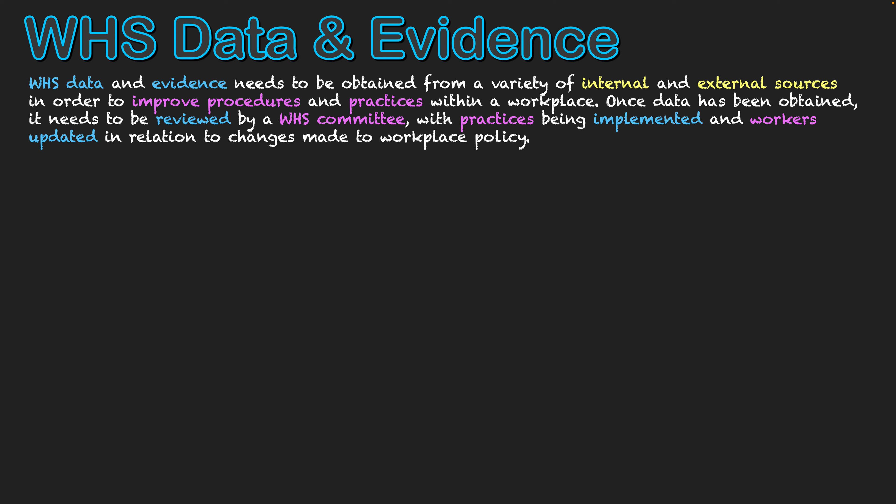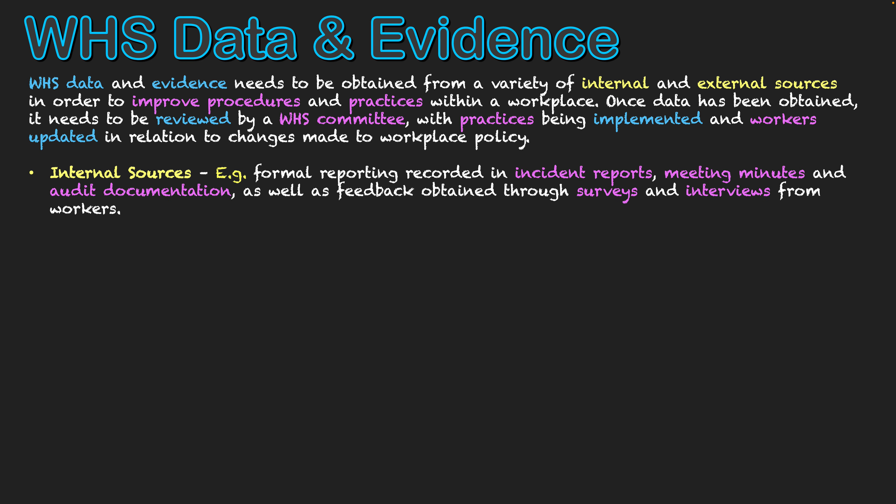The first thing we mentioned was talking about internal and external sources. Internal sources are things such as formal reporting that takes place in the workplace — all internal sources are within the workplace. These could be things such as incident reports, meeting minutes, and audit documentation. We need to review these and see what kind of things have happened in our workplace and then what changes need to be made based on that.